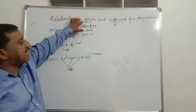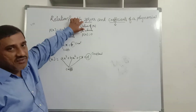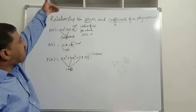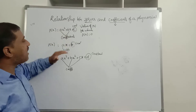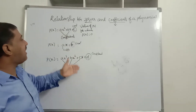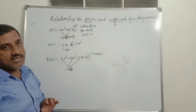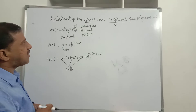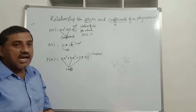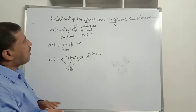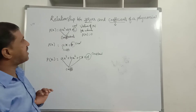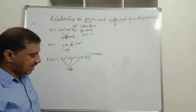Now we are going to establish a relationship between zeros — that is, values of x — and coefficients a, b, c, and constants d, c, b. What is the relationship between the zeros and the coefficients of the polynomial? First we will discuss the linear polynomial.